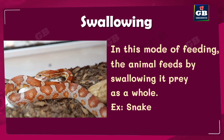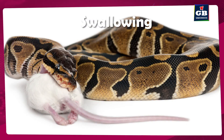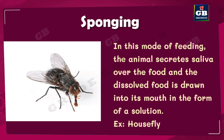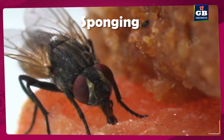Swallowing is a mode of feeding in which an animal feeds by swallowing its prey as a whole. For example, a snake swallows a rat as a whole. The next one is sponging. This is a mode of feeding in which an animal secretes saliva over the food and dissolves it. The dissolved food, now in solution form, is then drawn into the mouth with the help of its mouth parts.